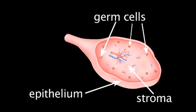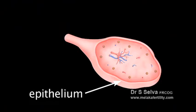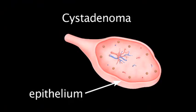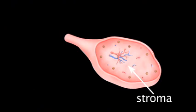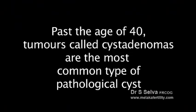Cysts can develop from different parts of the ovary. The commonest cysts that develop from the germ cells that form the eggs are dermoid cysts. The commonest cysts that develop from the epithelium are called cystadenomas. Cysts can develop from the stromal layer as well, but they are rare. In women under the age of 30, dermoid cysts are the most common type of pathological cysts. Past the age of 40, tumours called cystadenomas are the most common type of pathological cysts.